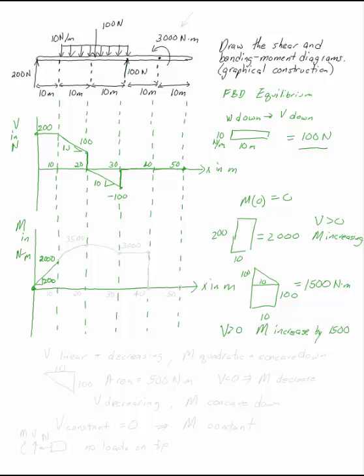If you take 2,000, you increase by 1,500, you get to 3,500. Now V is linear and decreasing. So M is quadratic and concave down. So I can sketch that in. I don't have to actually find out explicitly what the function of that line is. Remember our goal is to find out what the maximum value of M is and where it is.